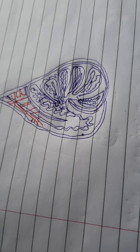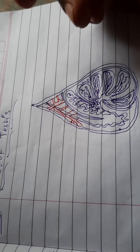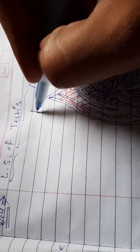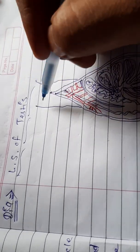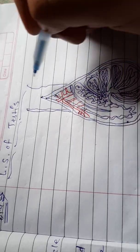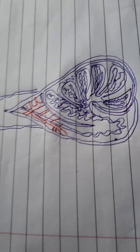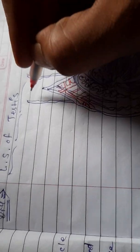Okay so these are the LS of testes. The last portion, after that draw spermatic cord. Okay these are the spermatic cord and dry vessels.